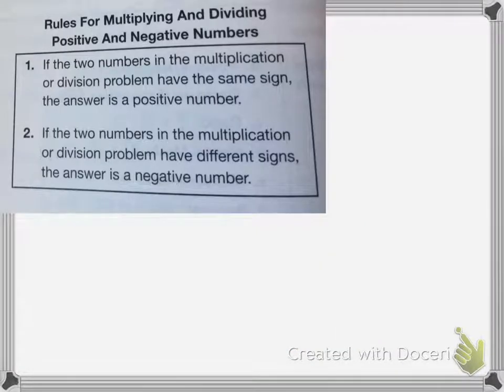The rules when multiplying and dividing positive and negative numbers: if the two numbers in the multiplication or division problem have the same sign, the answer is positive. If the two numbers in the problem have different signs, the answer is negative.